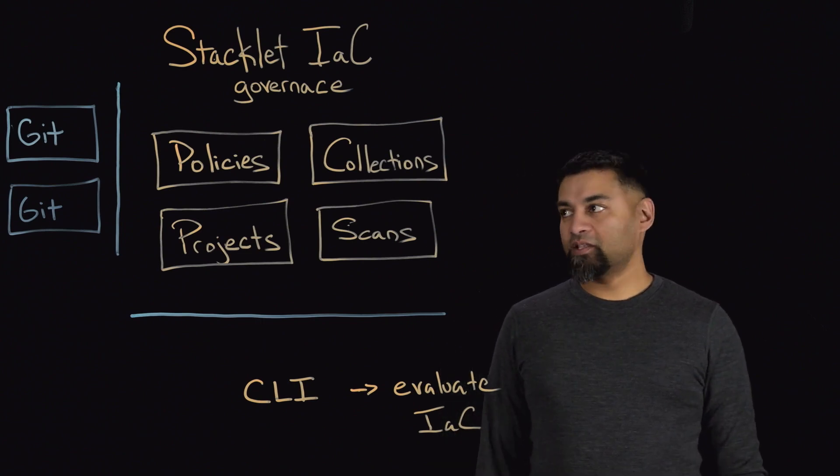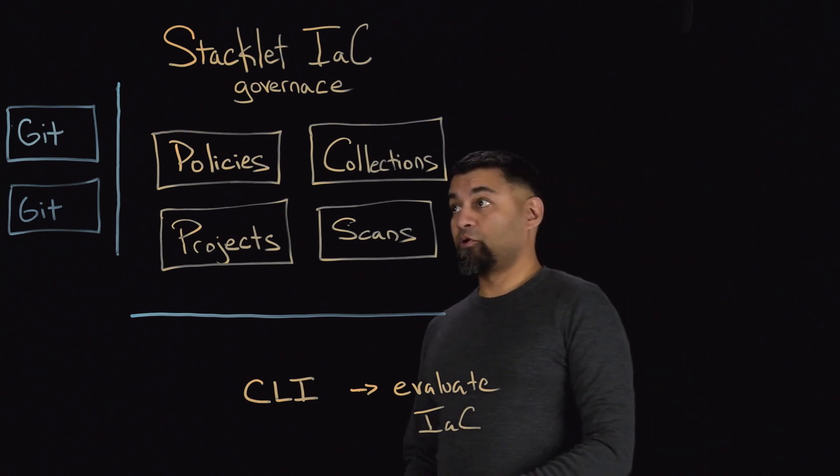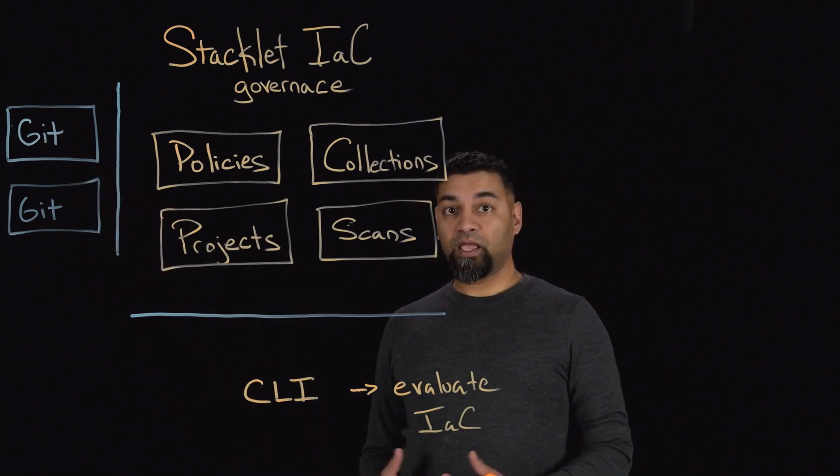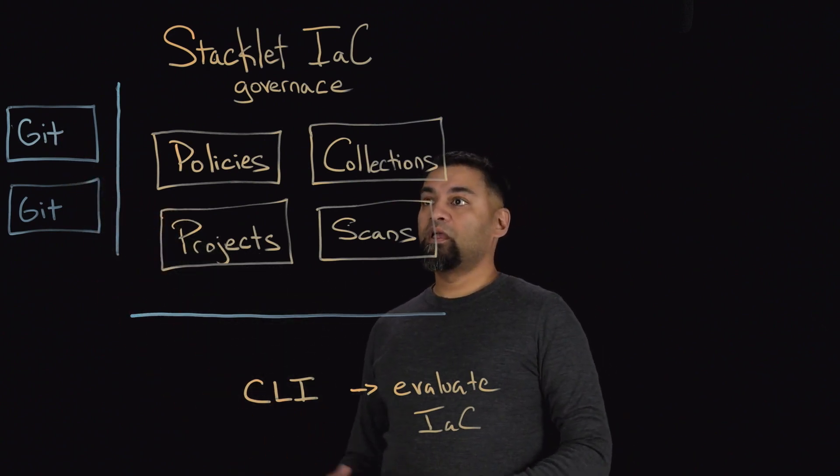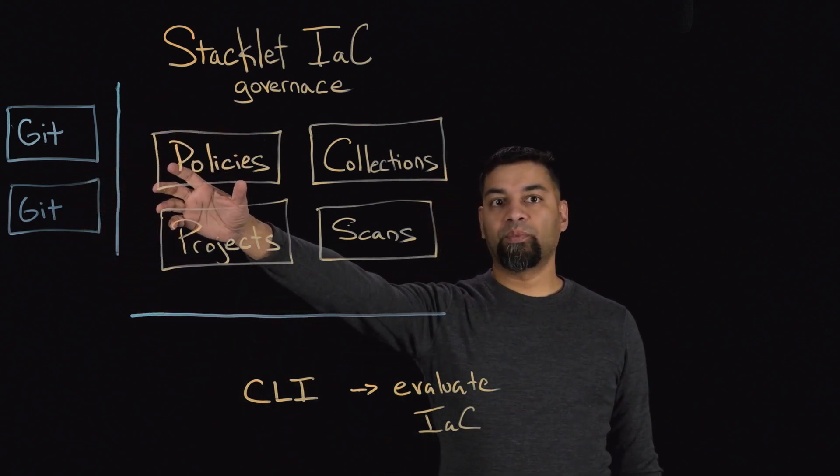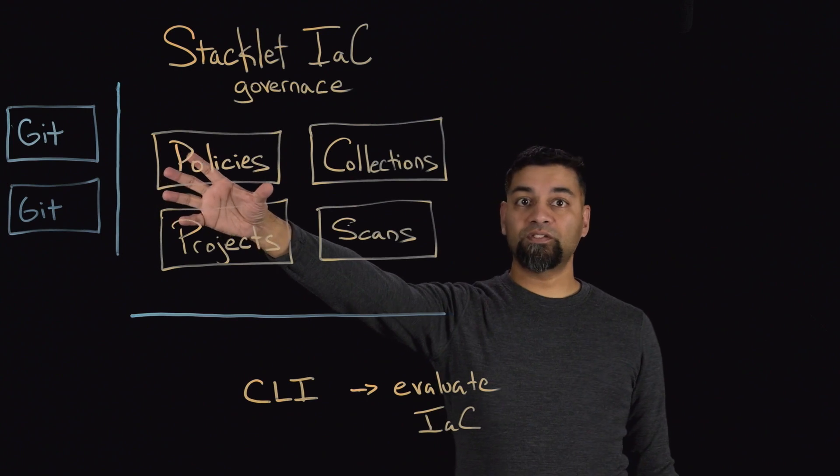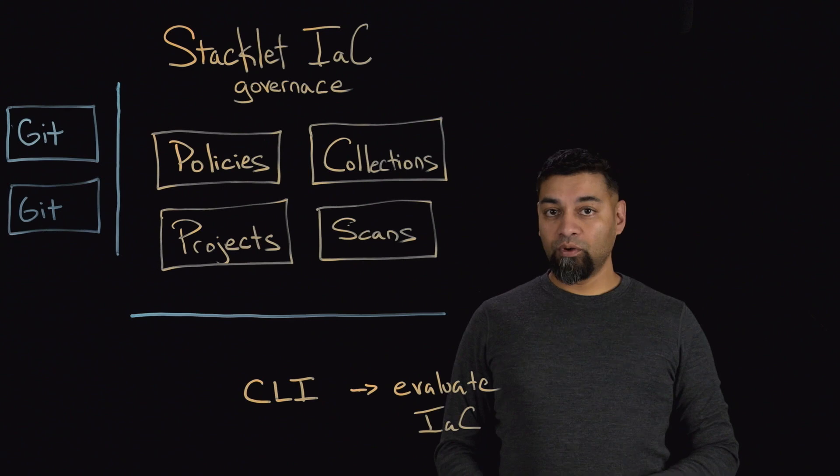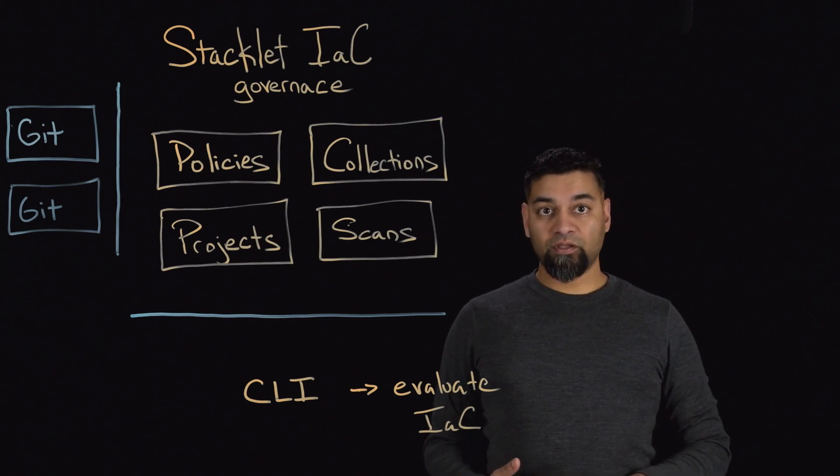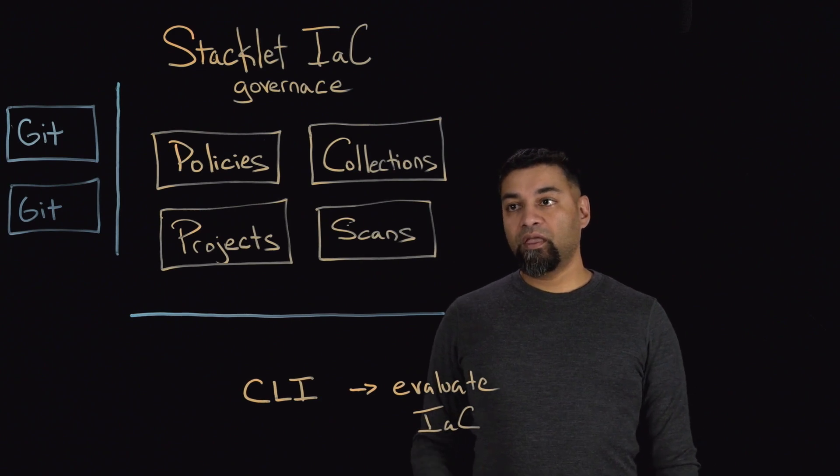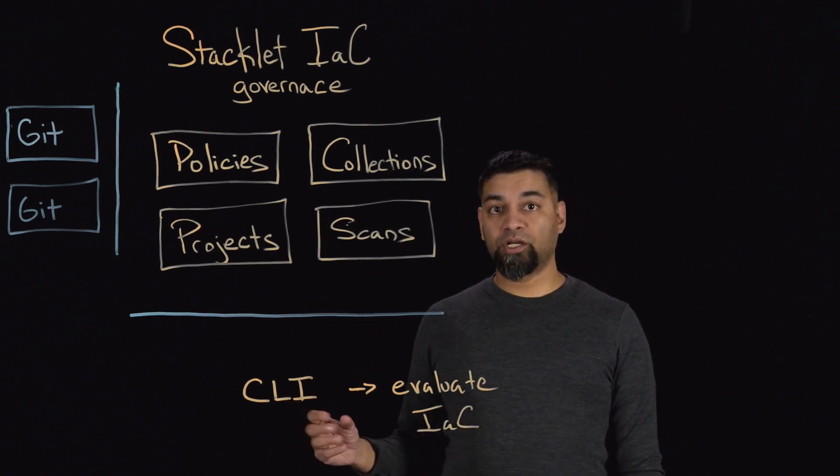So if we look at some of the core components of the Stacklit platform, we have a set of Git repositories that represent your infrastructure as code policies that then get ingested into the Stacklit platform as a set of policies that you then organize into collections that might correspond to CIS benchmarks, FinOps best practices, operational best practices, and then we take those collections and apply them to a set of projects.